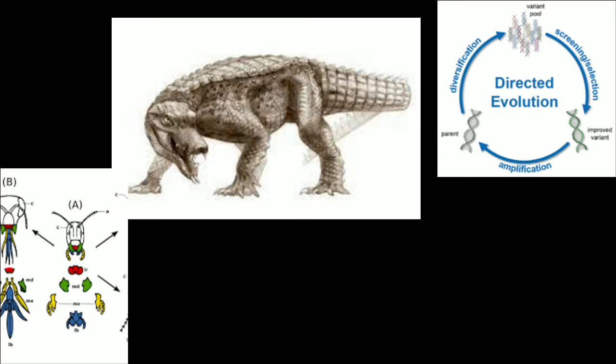In the event that they are all the more firmly related, they have normal progenitors. Transformative connections can be followed with the assistance of the accompanying: Homologous organs - Those organs which have a similar fundamental foundational layout and formative beginning yet carry out various roles and appearance. For instance, four limbs of frog, reptile, bird, bat and individuals. They have the same plan of bones however they carry out various roles.